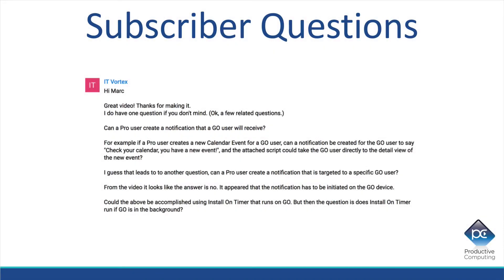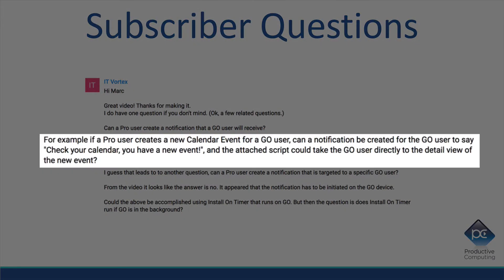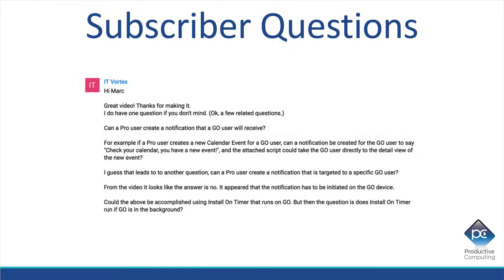They go on to ask: if a Pro user creates a new calendar event for a Go user, can a notification be created for the Go user to say, 'check your calendar, you have a new event,' and could the attached script then take that Go user directly to the detail view of that new event?